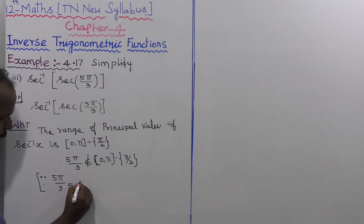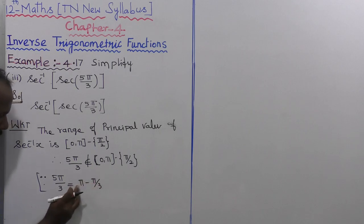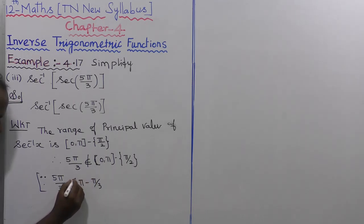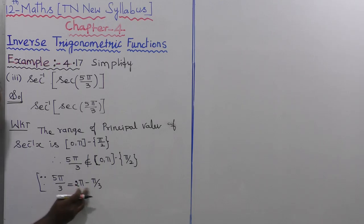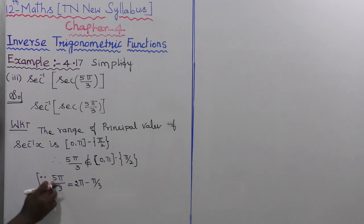Since 5π/3 does not belong to the closed interval [0, π] except π/2, we rewrite it. 5π/3 equals 2π minus π/3, because cross multiplication gives 6π/3 minus π/3 equals 5π/3. So this value exists in this form.